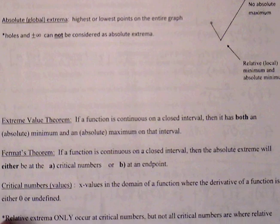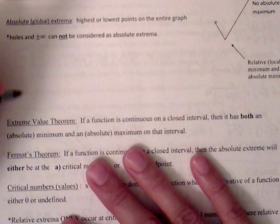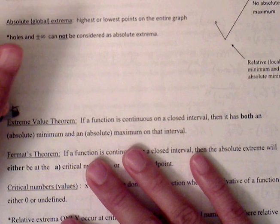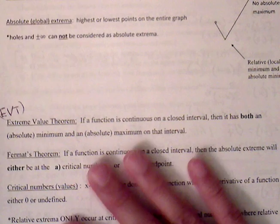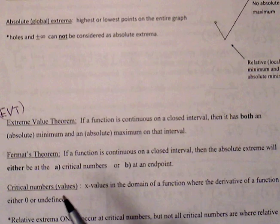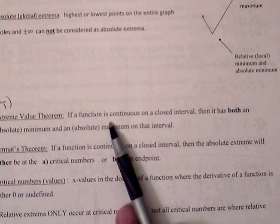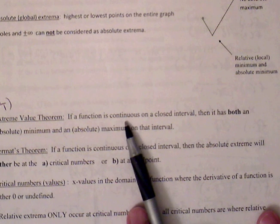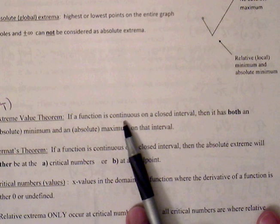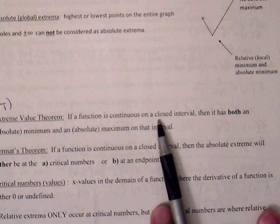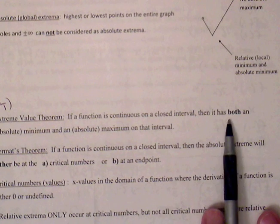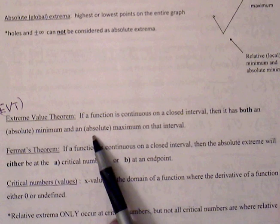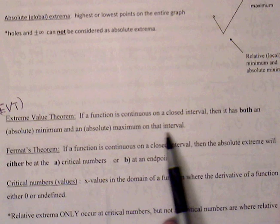This moves on to the Extreme Value Theorem, or EVT. The Extreme Value Theorem says if a function is continuous on the closed interval — meaning no breaks in the graph and the endpoints are defined — then it has both an absolute minimum and an absolute maximum on that interval.